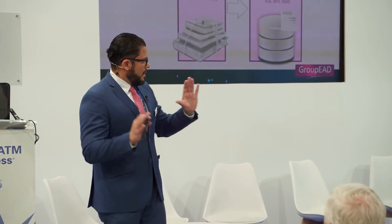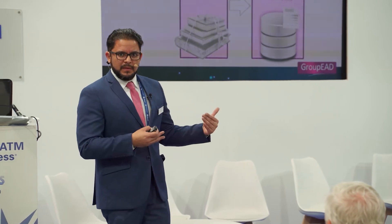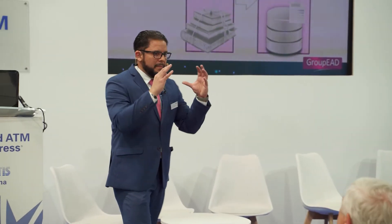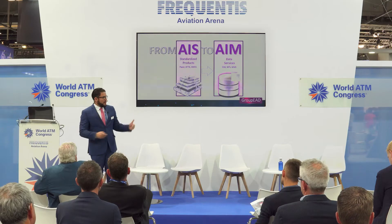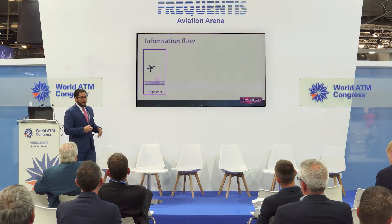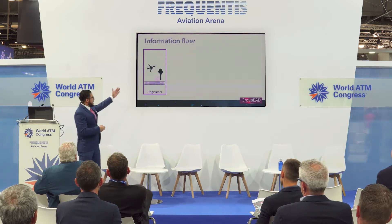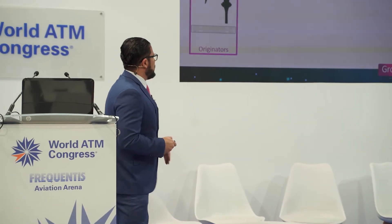The states have been putting a lot of effort into this transition from AIS to AIM. But there is a problem: this transition is actually addressing the middle part of the whole information flow. With aeronautical information, everything starts at the originator site — this is where all the interesting things happen. They close the airports, they close the airspaces, they activate airspaces, and so on.